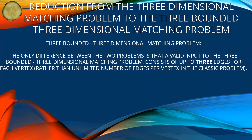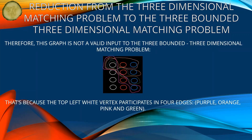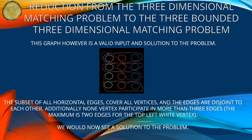The only difference between the two problems is that a valid input to the 3-bounded 3-dimensional matching problem consists of up to 3 edges for each vertex, rather than an unlimited number of edges per vertex in the classic problem. Therefore, this graph is not a valid input to the 3-bounded 3-dimensional matching problem, because the top left white vertex participates in 4 edges: purple, orange, pink, and green. This other graph, however, is a valid input and a solution to the problem. The subset of all horizontal edges covers all vertices, the edges are disjoint to each other, and no vertex participates in more than 3 edges. The maximum is 2 edges for the top left white vertex.